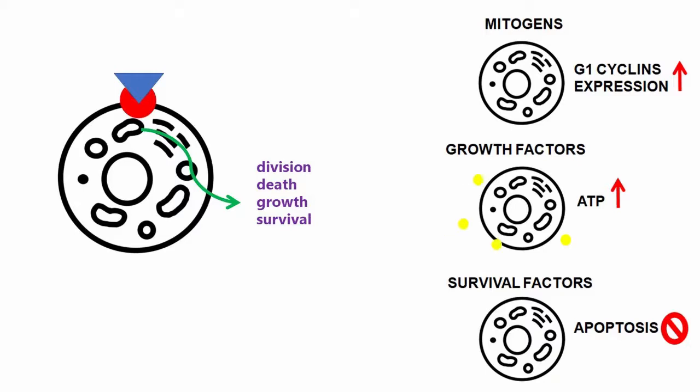Growth factors, that promote growth by stimulating accumulation of proteins and other macromolecules, increase nutrient uptake and production of ATP. And survival factors, that promote cell survival by suppressing apoptosis.